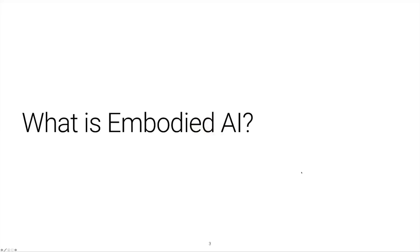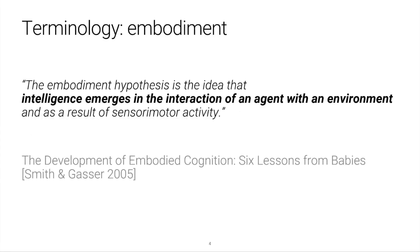First, let's talk a little bit about the term embodied AI. The term derives from embodiment, which is related to the embodiment hypothesis — the idea that intelligence emerges when an agent interacts with an environment as a result of that agent's sensory motor activity within that environment. This quote comes from a really nice paper by Smith and Gasser, and I would recommend that everybody take a look if they are interested in this fundamental concept of embodiment.